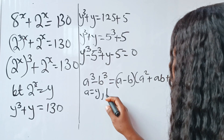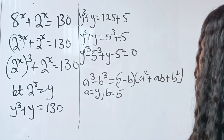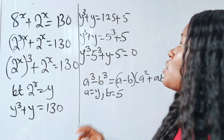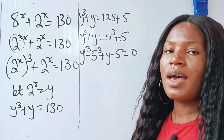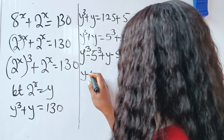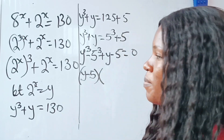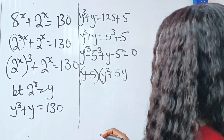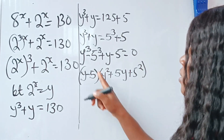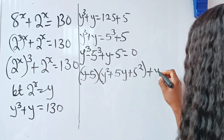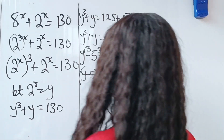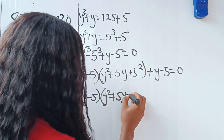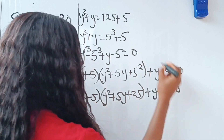In this case, our a is equal to y and our b is equal to 5. So we are going to substitute into the difference of cubes formula to replace y to the power of 3 minus 5 to the power of 3. What we have is a minus b — that is y minus 5 — multiplied by a squared plus ab plus b squared — that is y squared plus 5y plus 5 squared. Then plus y minus 5 is equal to 0.